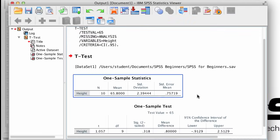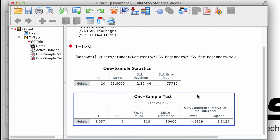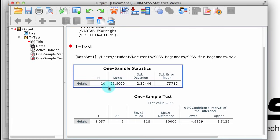The output window will pop up and you will see two tables. The first table contains our descriptive statistics, just like we've calculated before. We see the mean, standard deviation, and something called the standard error of the mean.